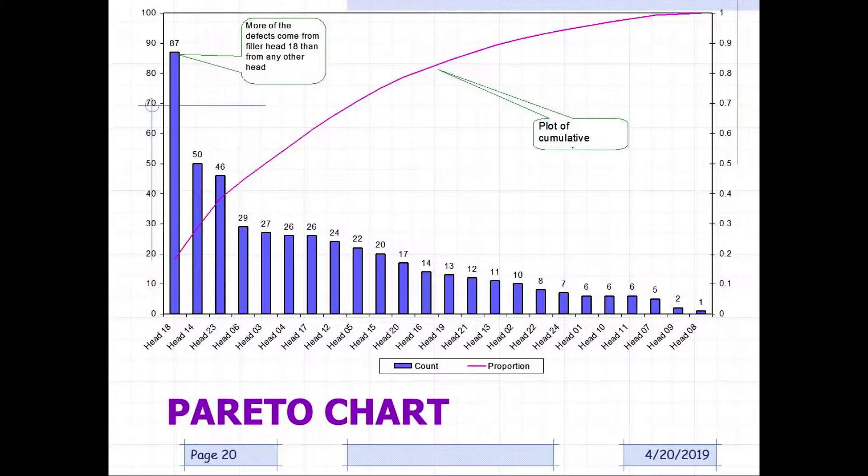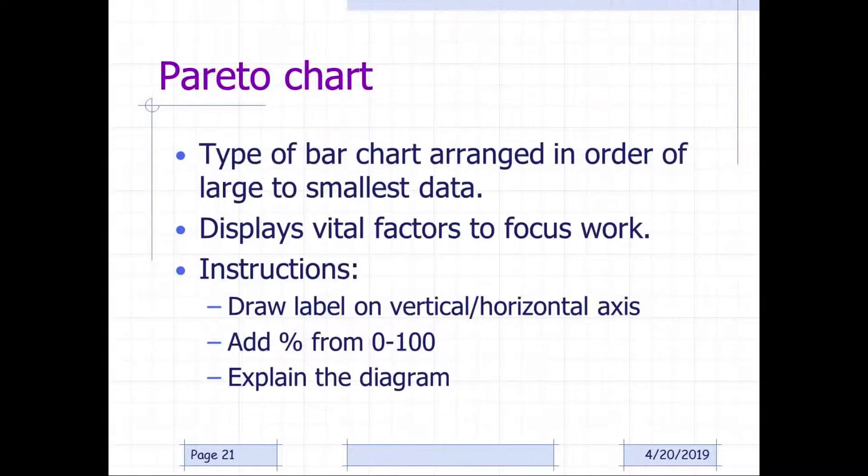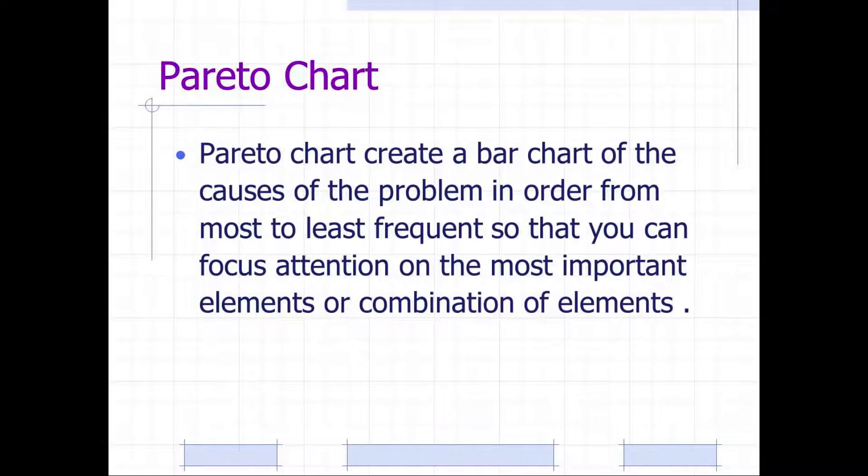And here's a Pareto chart. See how it's a little bit different than a histogram? Pareto charts are a type of bar chart arranged in order of the large to smallest data. It displays vital factors to focus the work. The instructions are to draw a label on the vertical horizontal axis, add percentages from 0 to 100, and then explain the diagram. A Pareto chart creates a bar chart of the causes of the problem in order from most to least frequent, so that you can focus your attention on the most frequent elements or combination of elements.